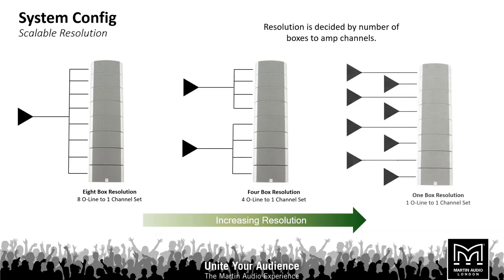Scalable resolution is decided by the number of boxes per amplifier channel. An O-Line array can be run entirely off one amplifier channel, or we can run anything from one-box resolution — where every box has its own amplifier channel and DSP — right down to eight-box resolution where every eight boxes receive the same DSP and amplification, and anywhere in between.